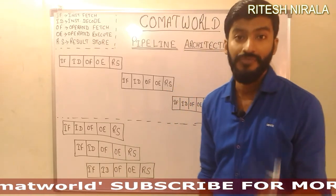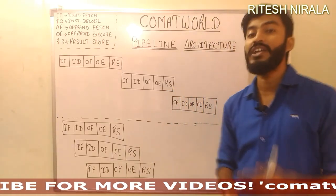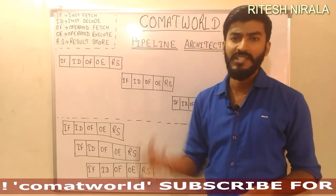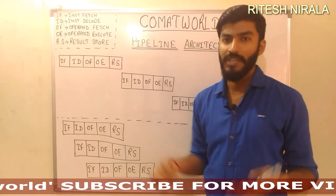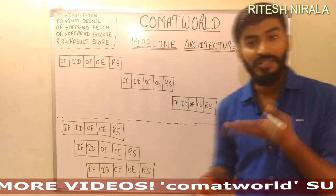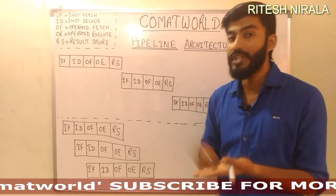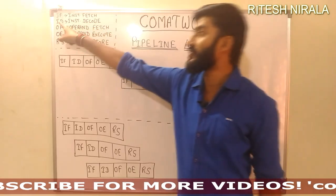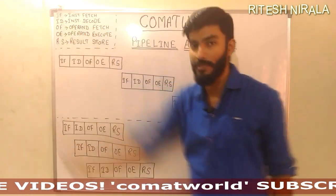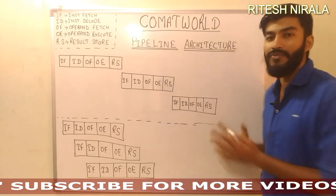After fetching the instruction, it needs to be decoded. That means after fetching, whatever language — assembly language, C, C++ — although the microprocessor only understands assembly language. If you're writing a program in assembly language, the machine only understands zeros and ones. So first it will decode that thing, and the phase of decoding is called the second phase — that is Instruction Decode (ID).